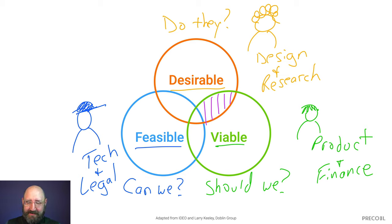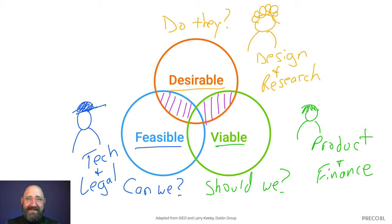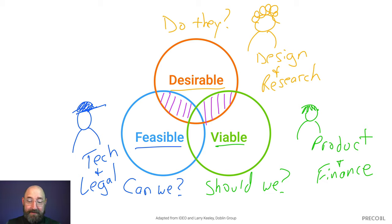Let's say you invited design, research, tech, and legal, but you didn't have product and finance in the room. Well, you can build something that people would want, but if the numbers never make sense it's going to die anyway — it's never going to get funded, you're going to lose money, and it's going to go away. So having product and finance in the room also matters.